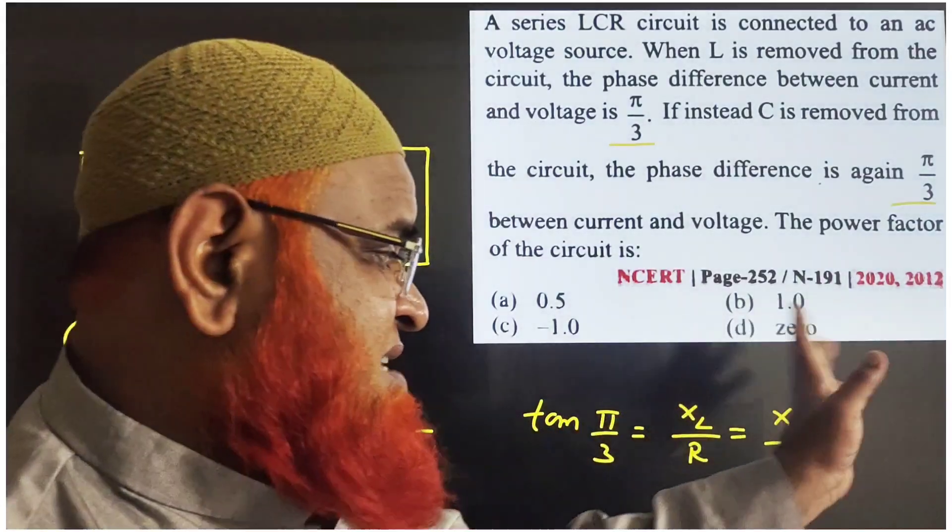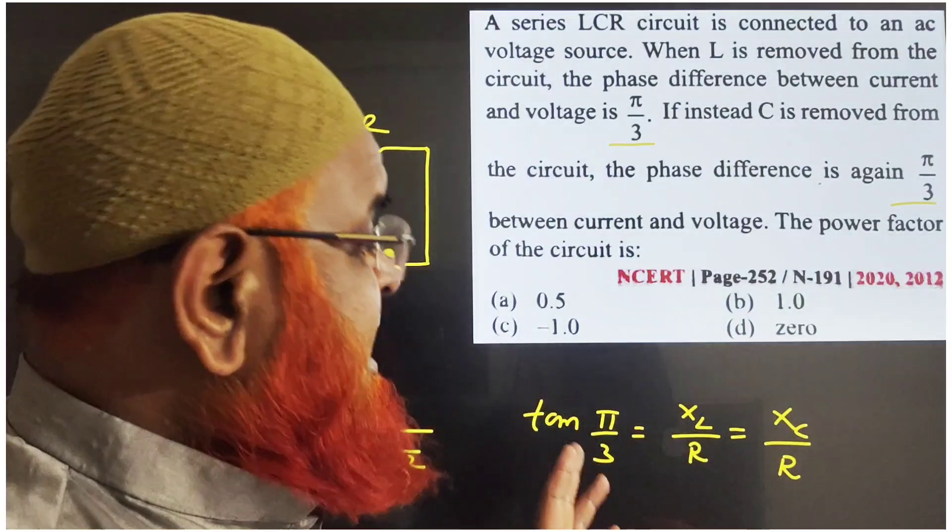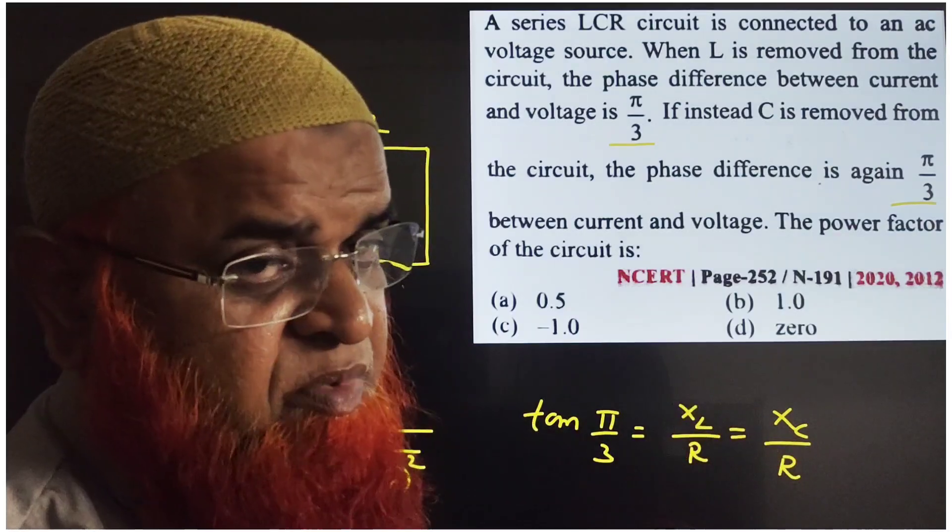You know, when capacitor is removed, inductor will be present. So tan π/3 is XL by R. Again, when inductor is removed, capacitor is present. Again tan π/3 is again XC by R.